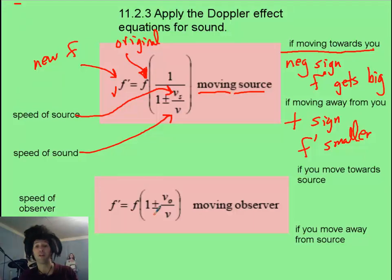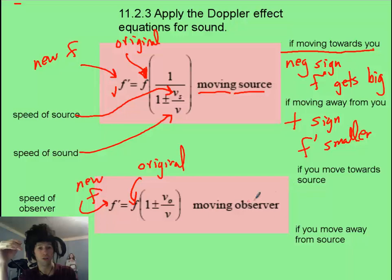Now, if the object emitting sound is stationary and you yourself are moving, you have to use a different equation. Kind of a pain, but it's still not too hard, as long as you know that this still means the new frequency f prime, and this is the original frequency f. Now, if you are moving towards the source, you should know that you're going to hear a higher frequency, because you're running into the waves more often because of your approach towards the source. So you should be using the positive sign.